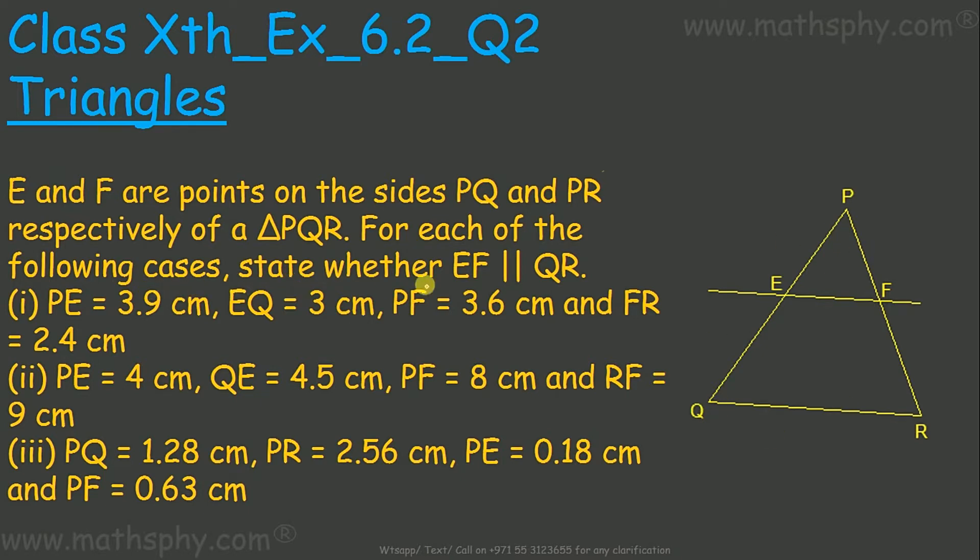For each of the following cases state whether EF is parallel to QR. We have three different conditions where we have been given different lengths of PE, EQ, PF and FR. And we have to see from these given lengths can we determine if EF is parallel to QR.